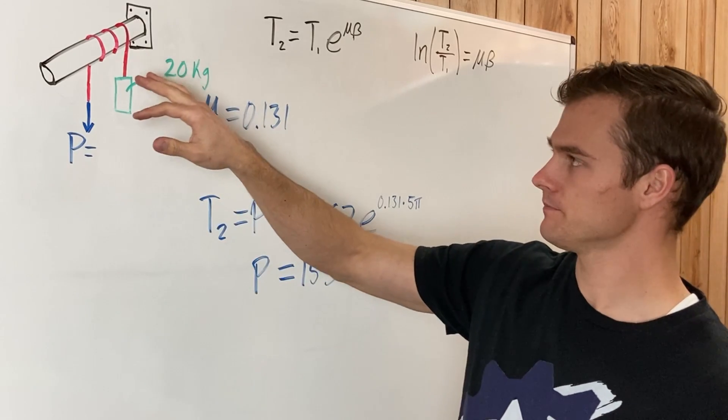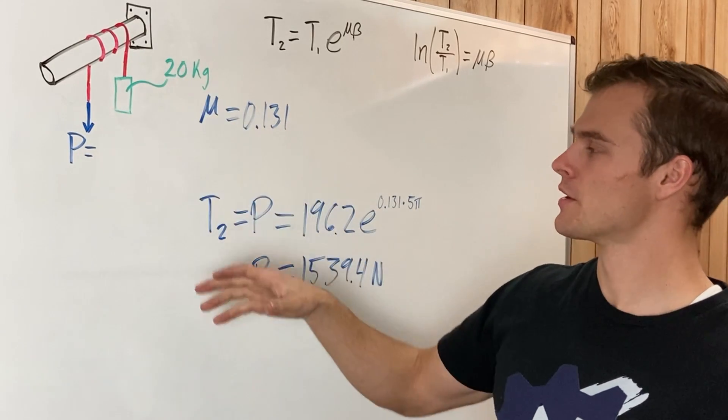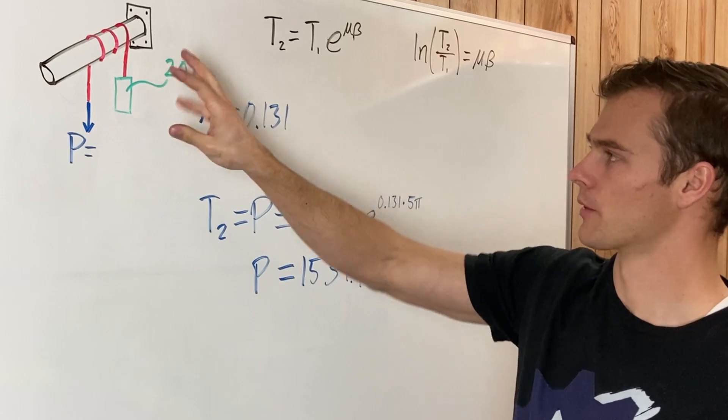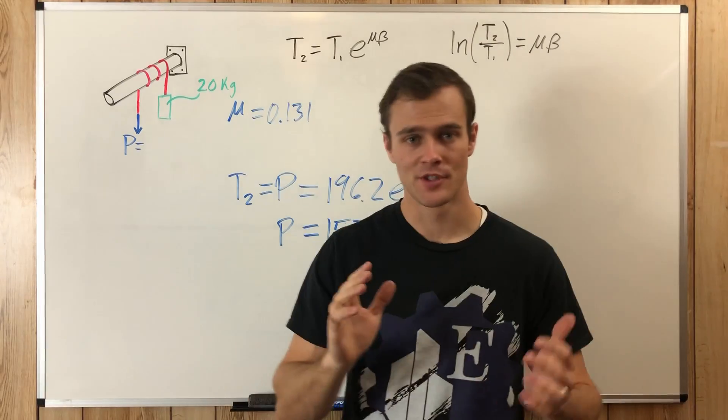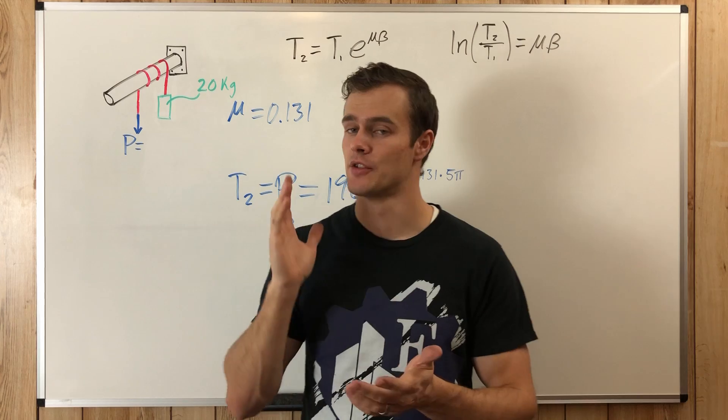And that is because of all the friction force involved with this rope wrapping around this pole. So that is how you solve that. And that's how you use those equations.